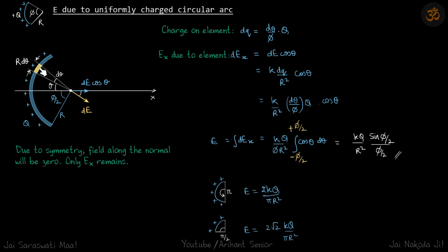Charge on the element, because of its small length, dq is equal to dθ/φ into q by the unitary method. Small angle dθ divided by total angle φ times q. Ex due to element will be dE cos θ.